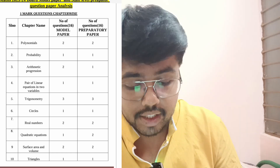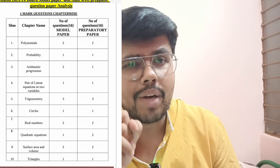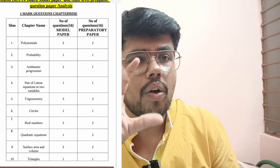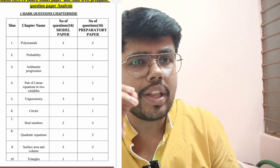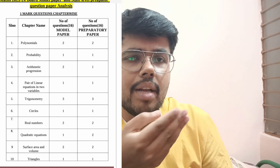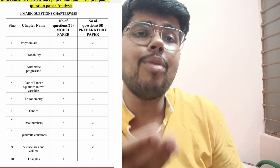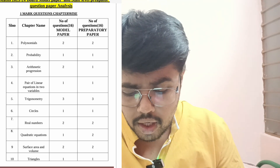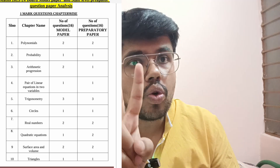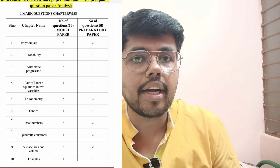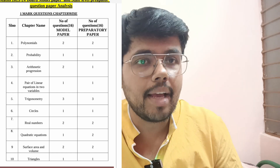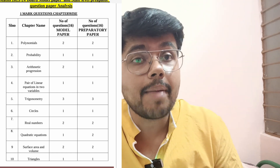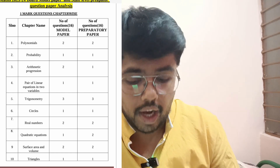For circles, one mark is always based on the two theorems — one theorem is already asked, and they will ask a question about the other theorem. Real numbers: two questions. One is easily predictable — it will be the Euclidean lemma. One more will be on the LCM times HCF equals A times B formula.